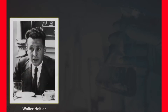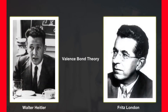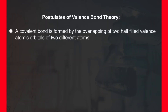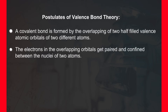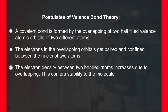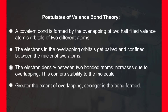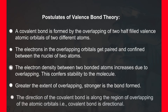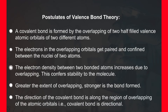Valence bond theory was introduced by Heitler and London in 1927, and developed further by Pauling and others. The main postulates are: a covalent bond is formed by the overlapping of two half-filled valence atomic orbitals of two different atoms. The electrons in overlapping orbitals get paired and confined between the nuclei of two atoms. The electron density between two bonded atoms increases due to overlapping, conferring stability to the molecule. Greater the extent of overlapping, stronger is the bond formed. The direction of the covalent bond is along the region of overlapping — that is, a covalent bond is directional.